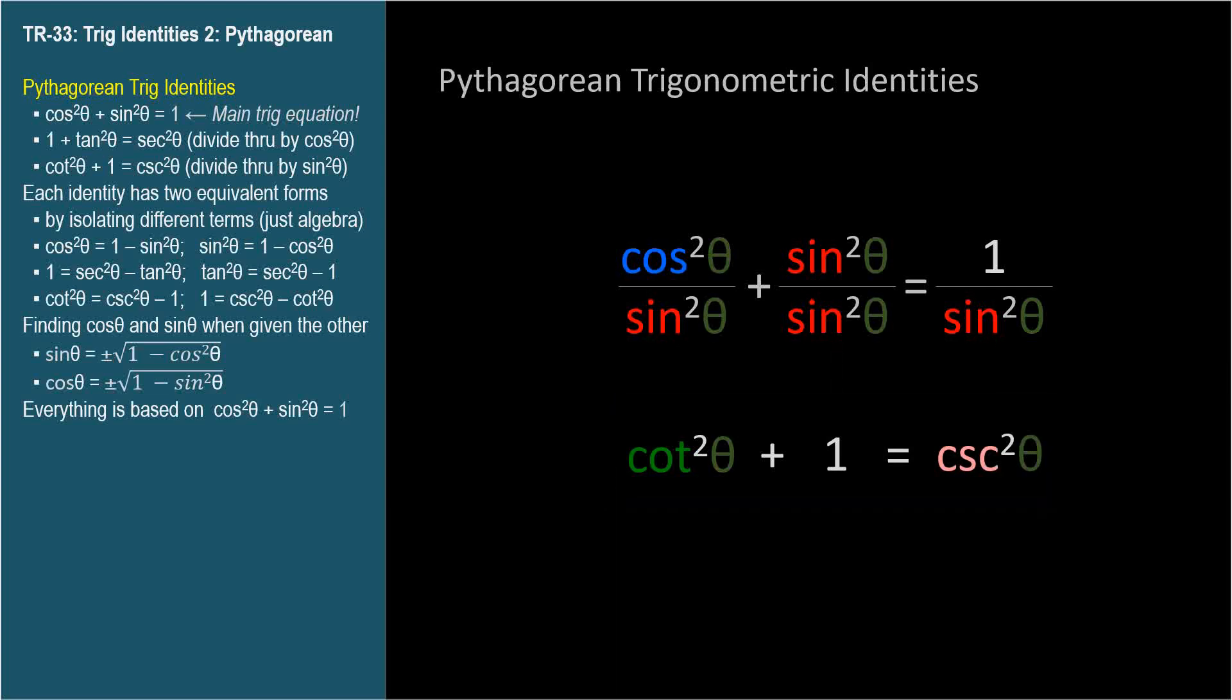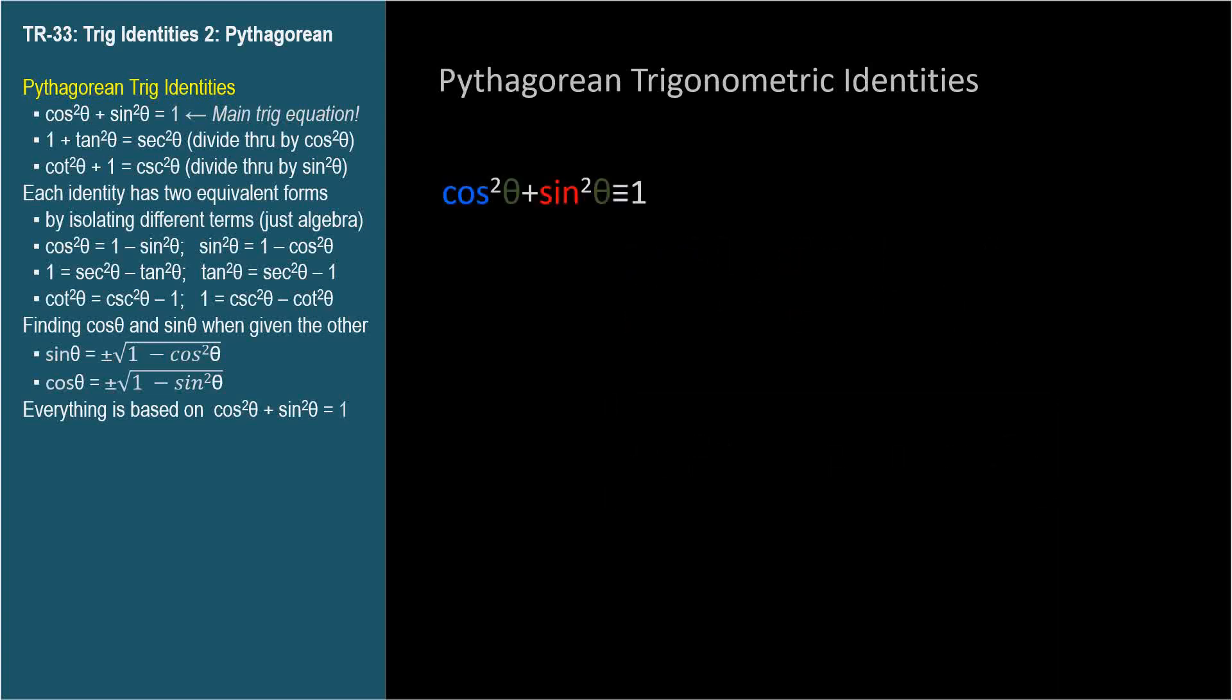See TR-14 if you need a review of the reciprocal trig functions. So we have three Pythagorean identities. Note that each consists of three terms.